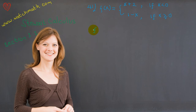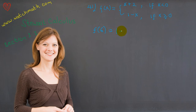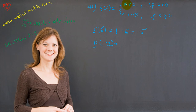For example, what is f(6)? Let us check whether the input is less than 0 or greater than or equal to 0. Certainly 6 is greater than or equal to 0, therefore according to the prescription it is equal to 1 minus the input. The input is 6, so f(6) equals negative 5. Now let us see another example. What is f(−2)? Negative 2 is less than 0, so the value of the function is the input plus 2. The input is negative 2, so negative 2 plus 2 equals 0.